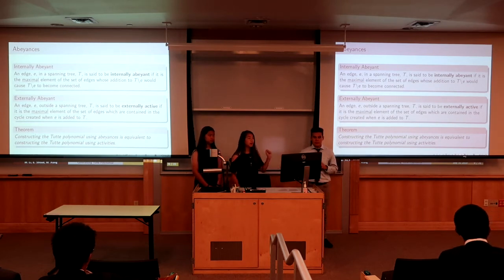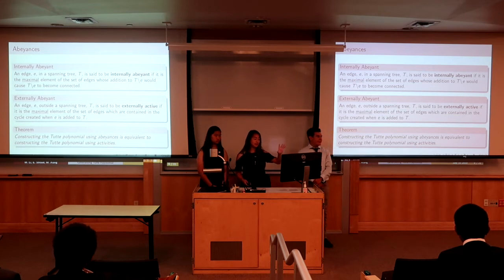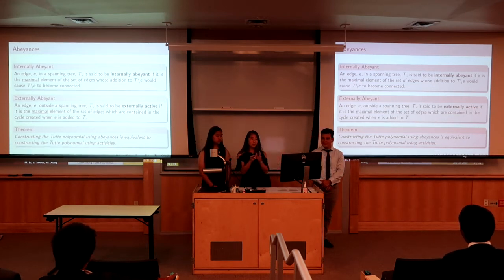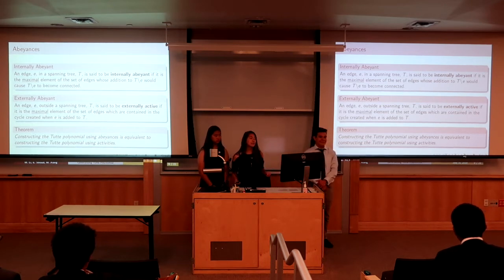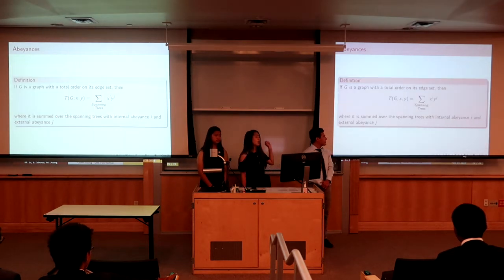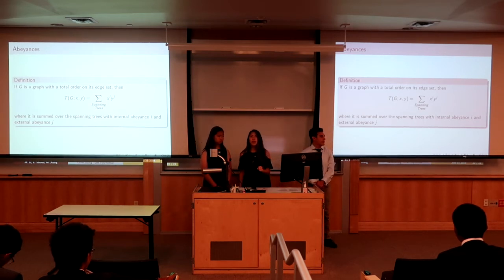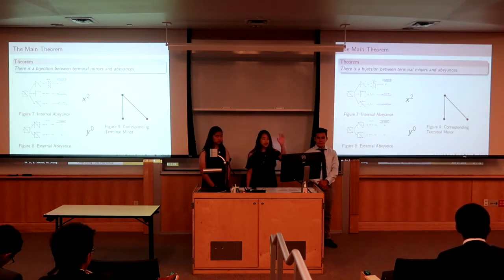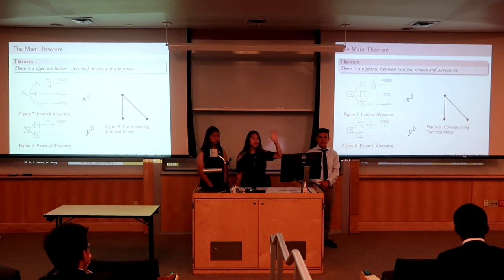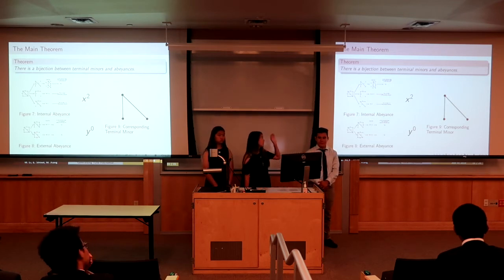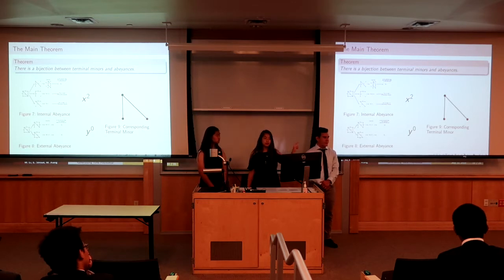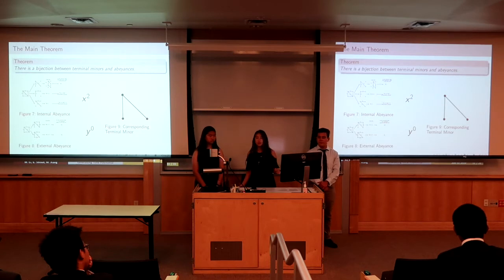Activities were predefined, but the problem with activities is that the term created by terminal minors — by counting the number of isthmuses and loops — and the term created by activities do not directly correlate. So we came up with a new way to define activities and called them abeyances. Instead of finding if edge e is the minimal value in the link set, we check if the element is the maximum value in the link set. We can construct a polynomial by counting the number of internal abeyances and external abeyances and summing over all spanning trees. The main advantage is that we proved a direct bijection between terminal minors and abeyances, so the term created by counting isthmuses and loops is equivalent to the term created by abeyances. For example, for a terminal minor with two isthmuses, its term would be x squared. If we count the abeyances, there are two internally abeyant edges and zero externally abeyant edges, which also creates the term x squared — confirming their equivalence.